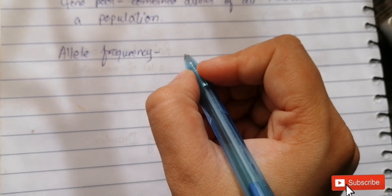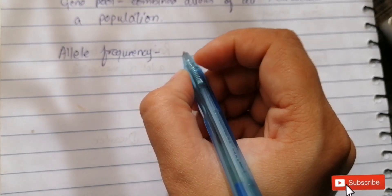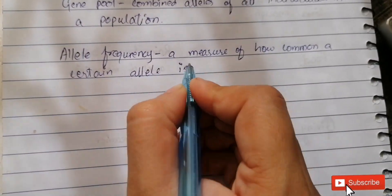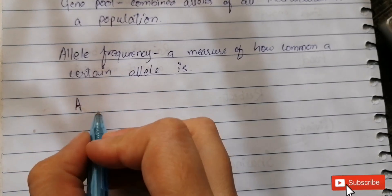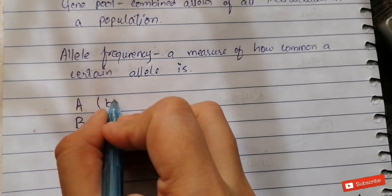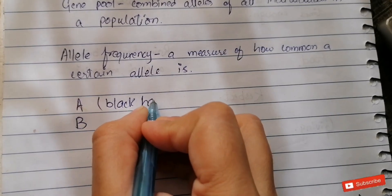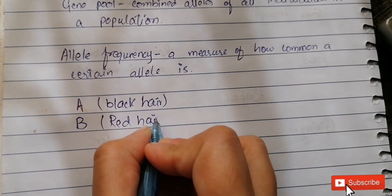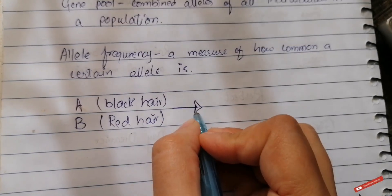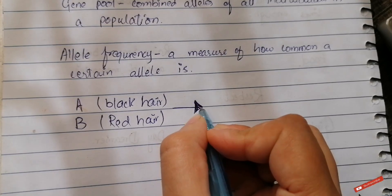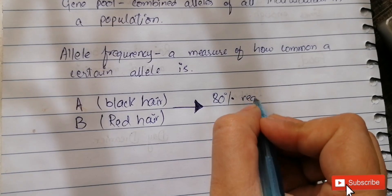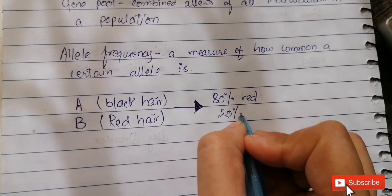Next is allele frequency — a measure of how common a certain allele is in a population. For example, consider two parents: parent A has black hair and parent B has red hair. If 80 percent of their offspring have red hair and 20 percent have black hair, this tells us something important about allele frequency.